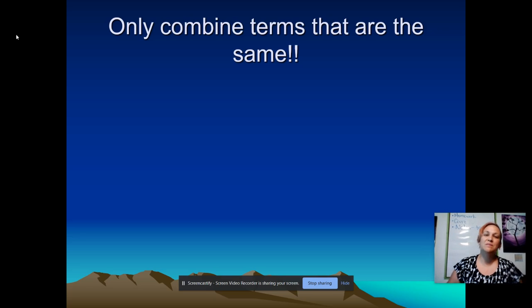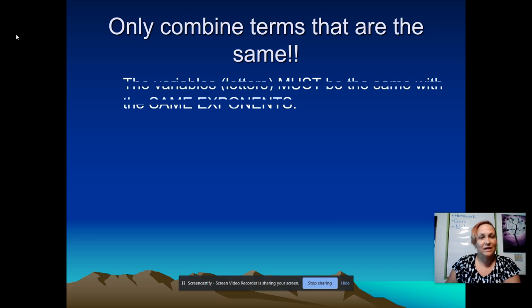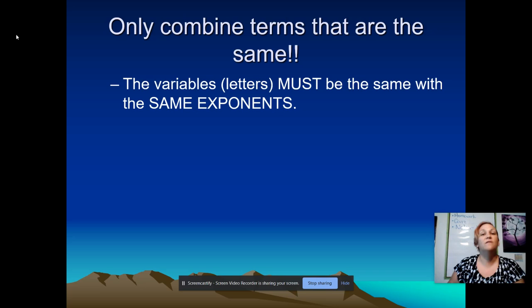Now before we can combine like terms, let's make sure that we understand what we're allowed to combine together. So again, we didn't combine together the apples with the bananas. We only combined apples with apples. And so when you're combining like terms for algebra, you also want to find things that are exactly the same. Specifically, the variables have to be the same and the exponents on the variables also have to be the same.